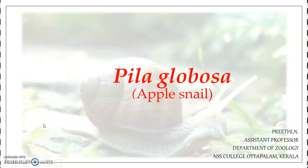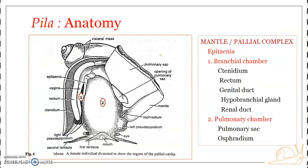Welcome back to a new session on Pila globosa. In this presentation we'll be looking in detail at the mantle and the mantle complex. The body of Pila is divided into three parts: the head, the foot (the ventral part), and the major part forming the visceral mass. The skin of the visceral mass forms a thin delicate covering which is referred to as the mantle — a loose fold of skin which covers the visceral mass.